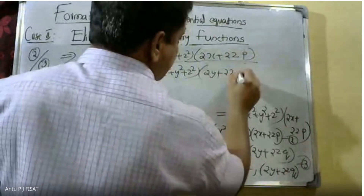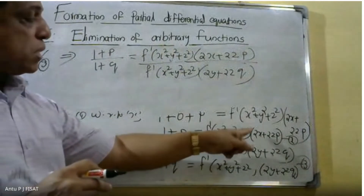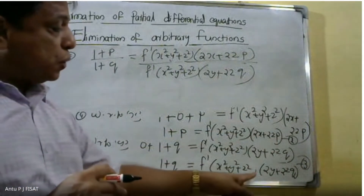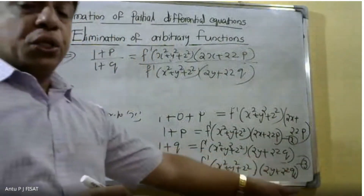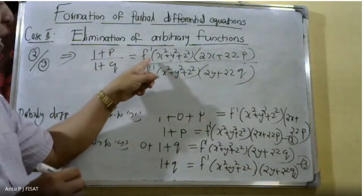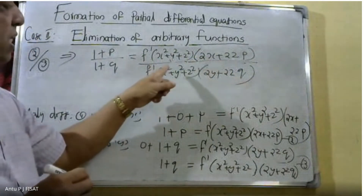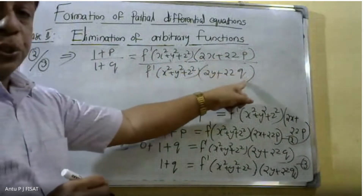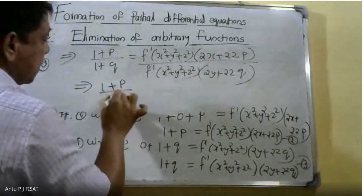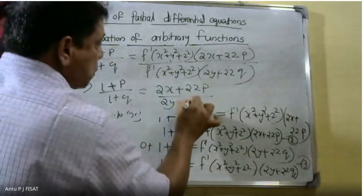Equation 2 is one plus P equals F dash X square plus Y square plus Z square into 2X plus 2Z into P. Equation 3 is F dash X square plus Y square plus Z square into 2Y plus 2Z into Q. So one plus P by one plus Q equals 2X plus 2Z into P divided by 2Y plus 2Z into Q.